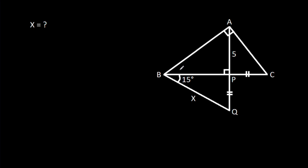In this video, we have been given that angle BAC is 90 degrees, angle APB is 90 degrees, angle CBQ is 15 degrees, and AP is 5. CP is equal to PQ and BQ is X. Then we have to find X.